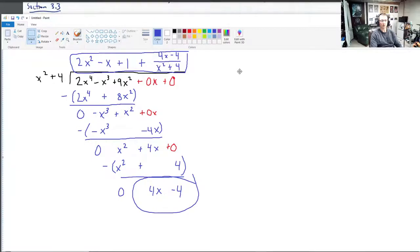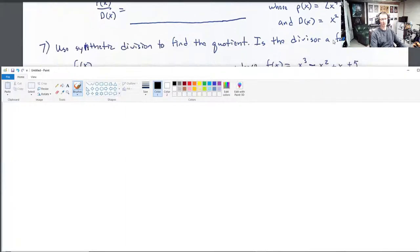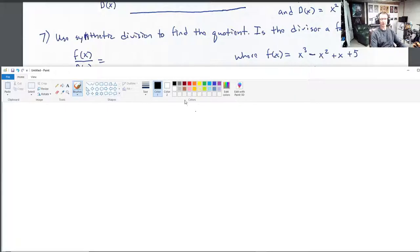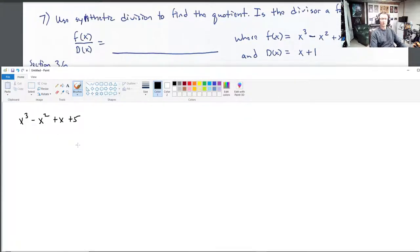All right. So, for the next one, we've got use synthetic division to find the quotient. Is the divisor a factor of f? Same question. Different polynomials. So, what we've got here is it's important to note this, for synthetic division, this divisor needs to be a line. It cannot be something like the previous question, a quadratic. It has to be a line. So, I've got this right where we need it now. I'm going to just write this down. x cubed minus x squared plus x plus 5. Now, I can scroll down. We're dividing by x plus 1.